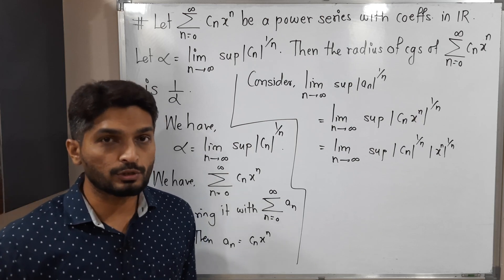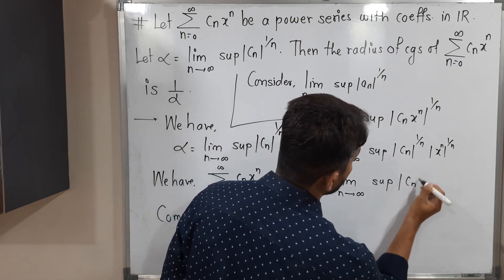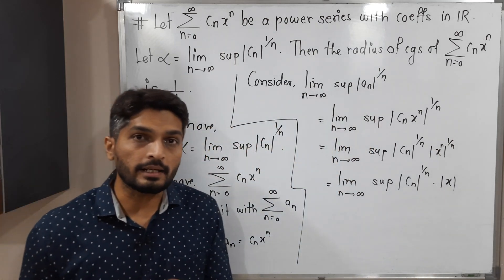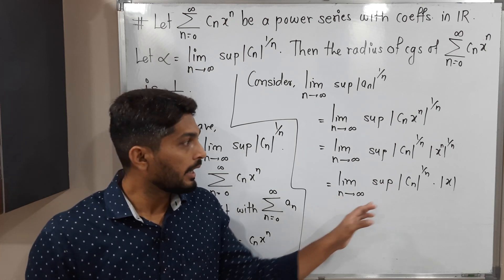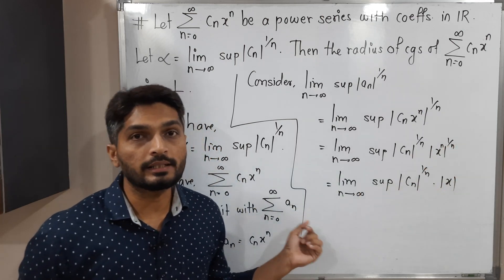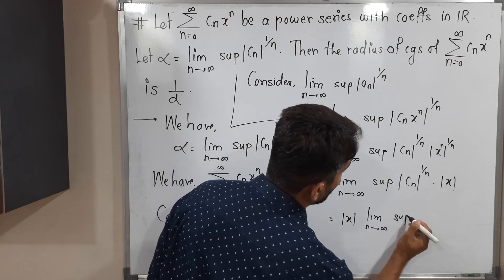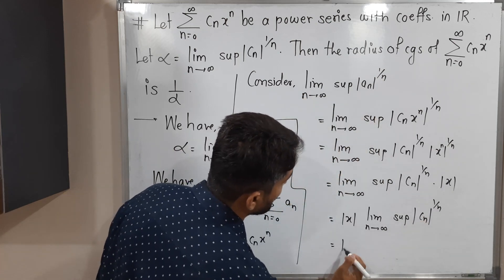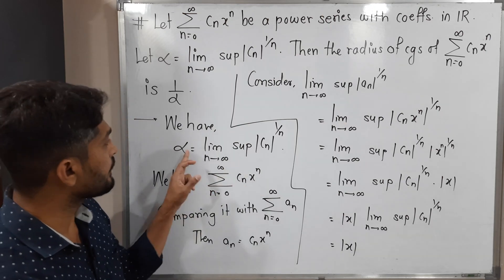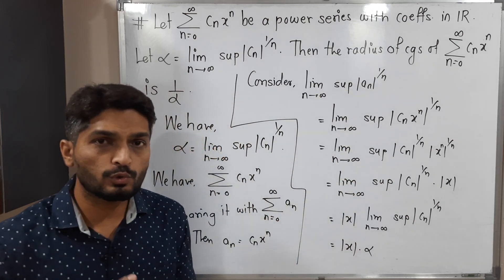The exponents n and 1/n cancel each other, so we have the limit as n tends to infinity of the supremum of |cₙ|^(1/n), multiplied by |x|. Since |x| is independent of n, we can take it outside the limit, giving us |x| times the limit supremum of |cₙ|^(1/n). This is exactly the definition of α, so the result is |x|·α.